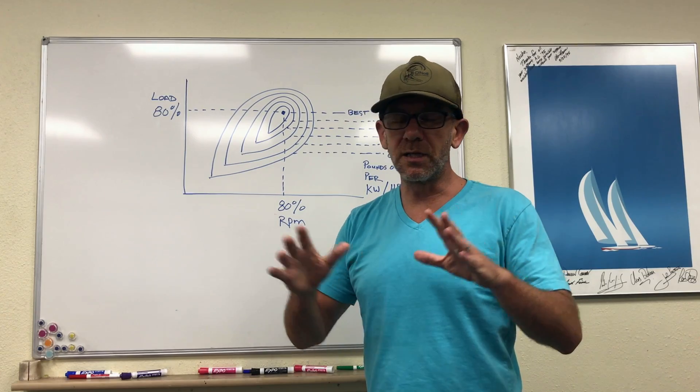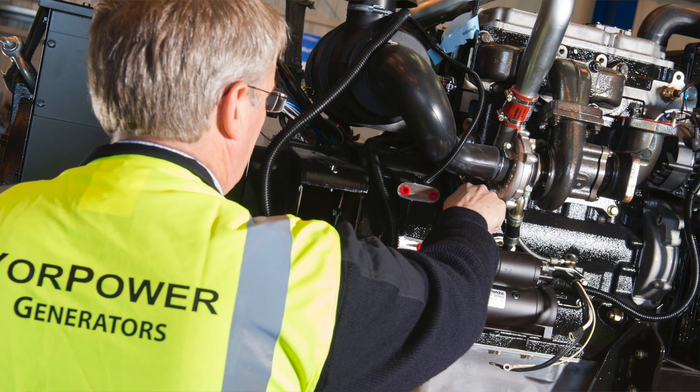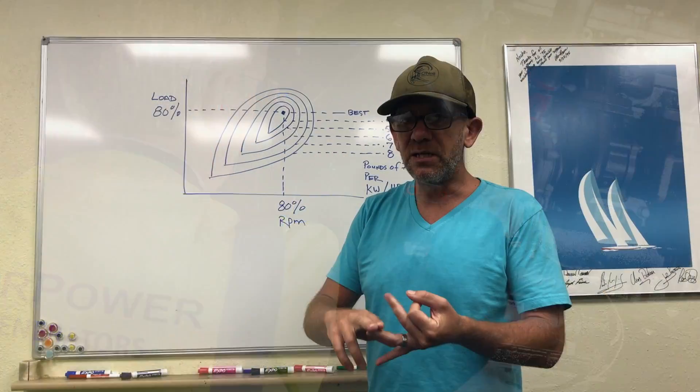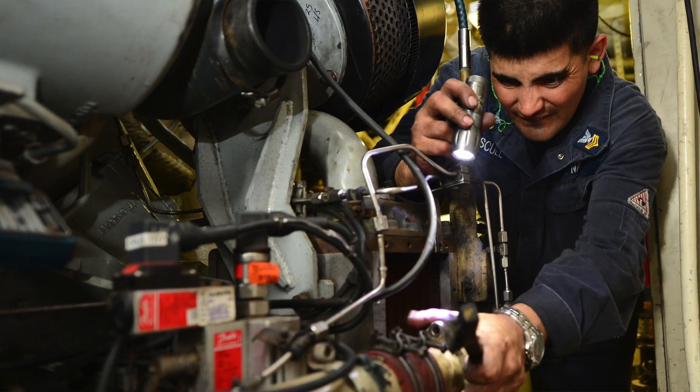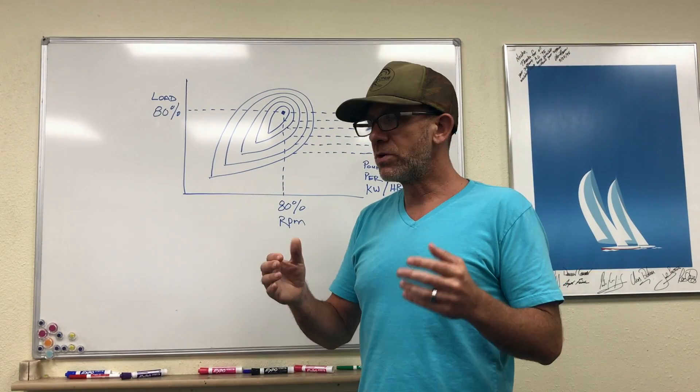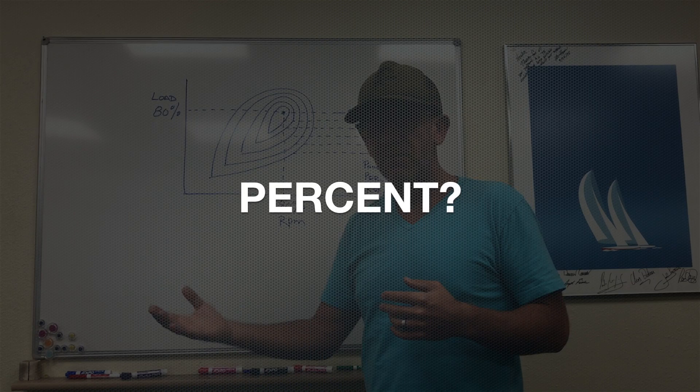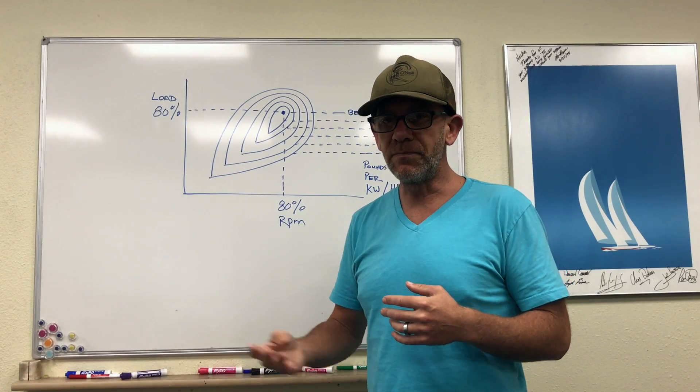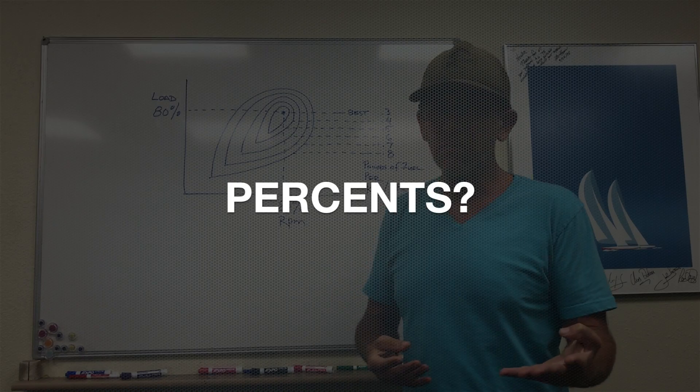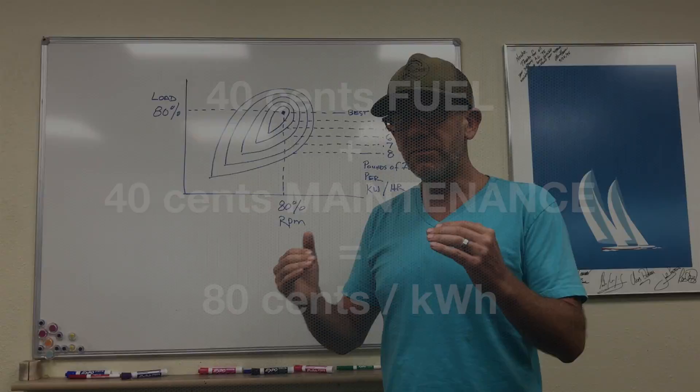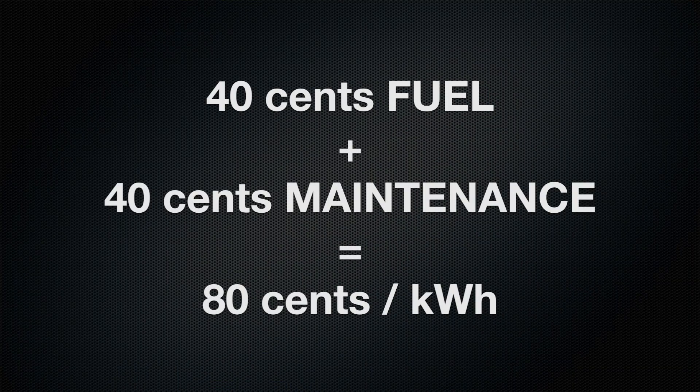What I know from looking at a lot of different scenarios is other expenses - the cost of equipment, the maintenance, the replacement - is going to be around another 40 cents. When you have the 40% of your maintenance and equipment plus the 40% of fuel in the very best scenario, that's how you get your 80 cents per kilowatt hour.